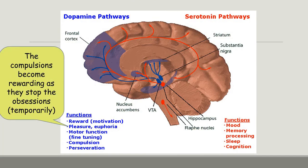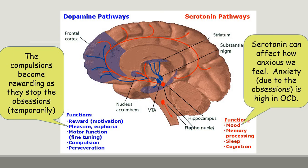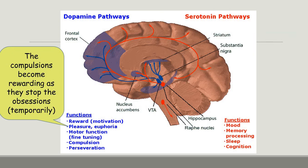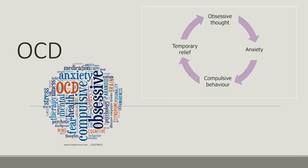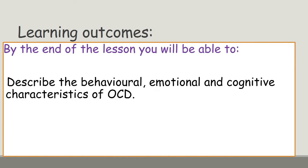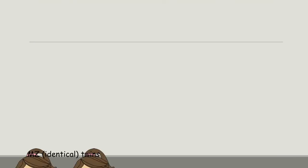If we take a look at the pathways in the brain — you don't need to learn all the intricate details, but the fundamentals are in your booklet. The compulsions that we may have become rewarding because they stop the obsession happening. Looking back at that pathway: we have an obsessive thought — the cognitive aspect — which produces the emotional aspect of anxiety, which leads to compulsive behaviour. We can link this to the neurotransmitters and what's going on in the brain.